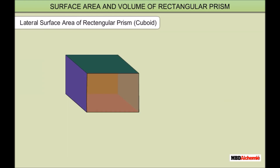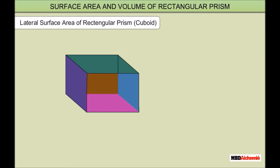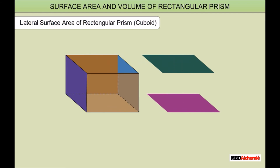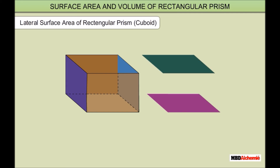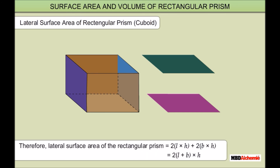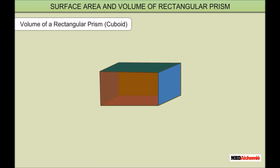Lateral surface area of a rectangular prism: suppose out of the 6 faces, we only find the sum of the area of the 4 faces, leaving the bottom and top faces. In such a case, the area of the 4 faces is called the lateral surface area. Therefore, the lateral surface area equals 2(L×H) + 2(B×H) = 2(L+B)×H.